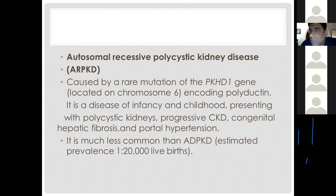Autosomal recessive polycystic kidney disease is caused by a mutation in the PKHD1 gene; the protein product is polyductin. It usually occurs in infancy and presents with polycystic kidney disease, progressive CKD, and congenital hepatic fibrosis leading to portal hypertension. Its incidence is 1 in 20,000 live births, making it less common than ADPKD but more common than juvenile nephronophthisis.